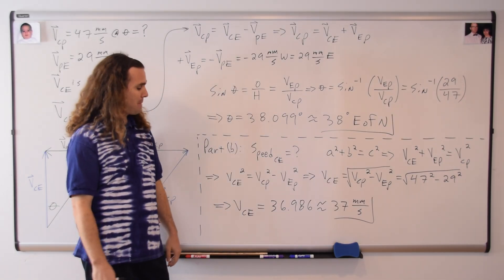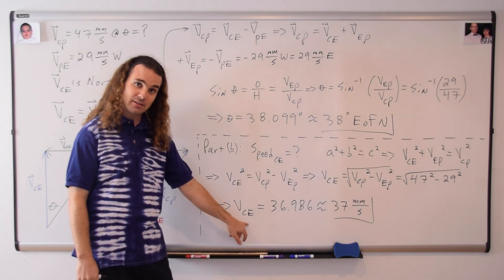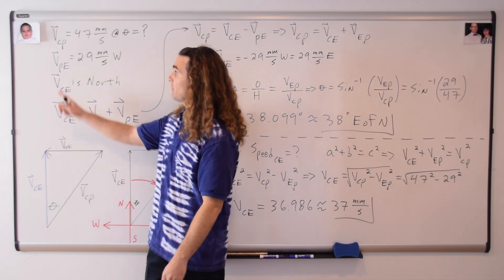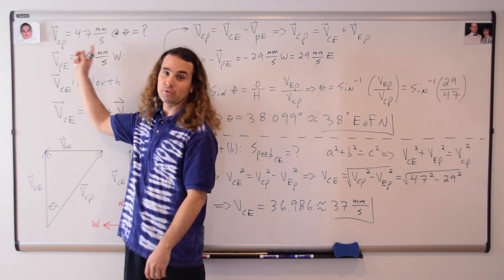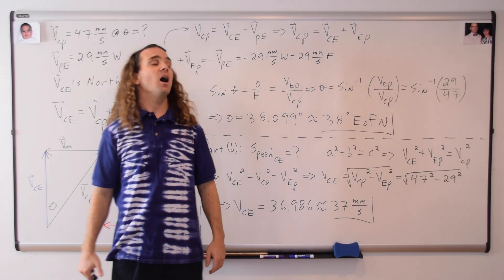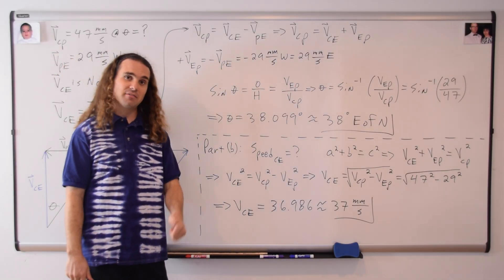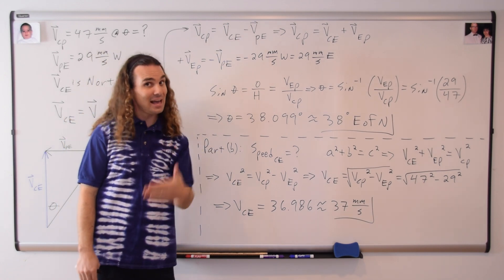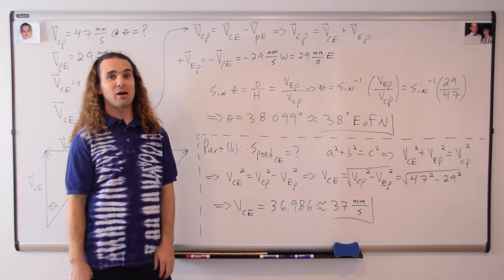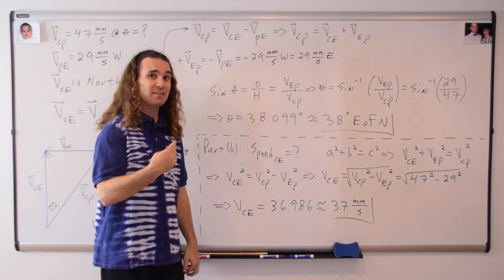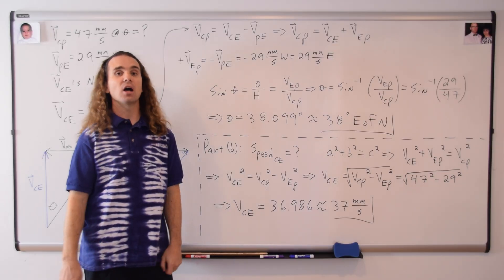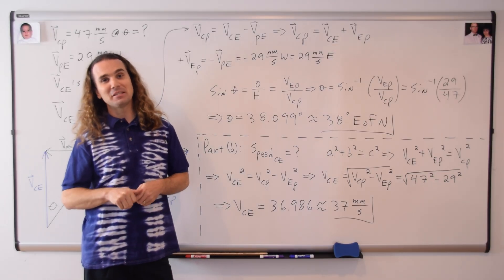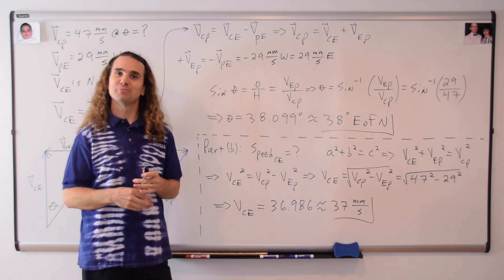It turns out that the magnitude of the velocity of the car with respect to the earth is less than the magnitude of the velocity of the car with respect to the paper, because the positive velocity of the car with respect to the paper in the x direction ends up being canceled out by the negative velocity in the x direction of the paper. Thank you very much for learning with me today. I enjoyed learning with you.